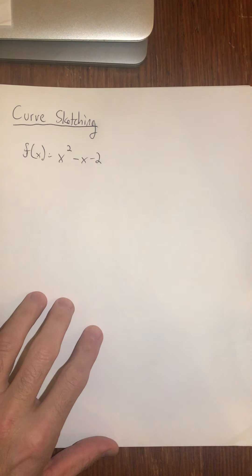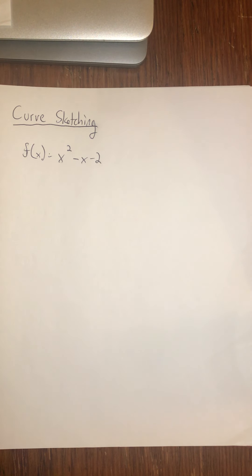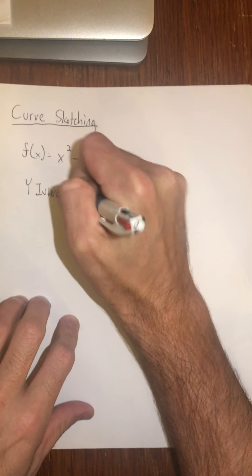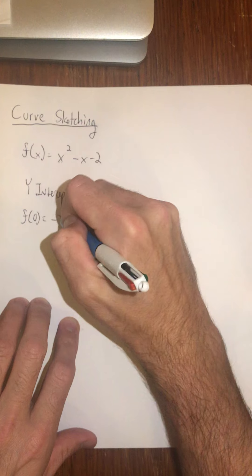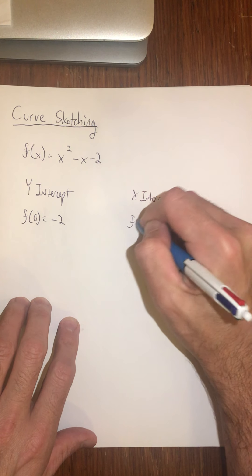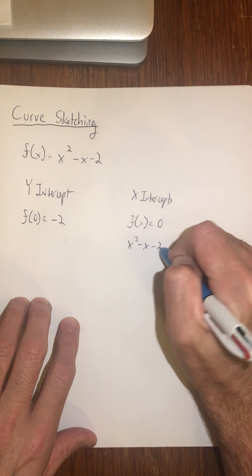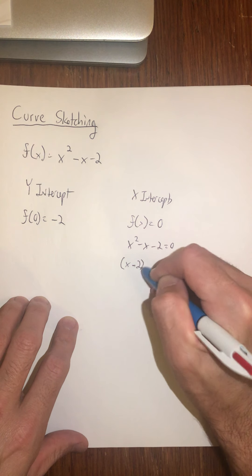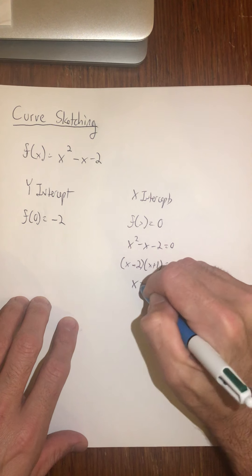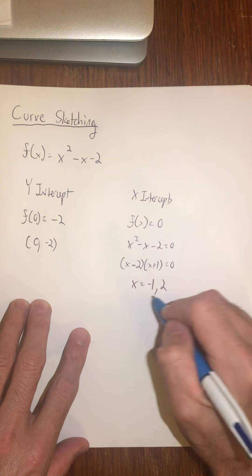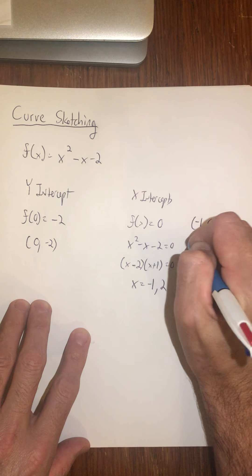If the problem says find all important points — intercepts, extrema, and points of inflection — here's the work standard. The y-intercept is found by doing f(0), which gives negative 2. For x-intercepts, set f(x) = 0. This function factors: x equals negative 1 or 2. So our y-intercept is the point (0, -2), and our x-intercepts are (-1, 0) and (2, 0).